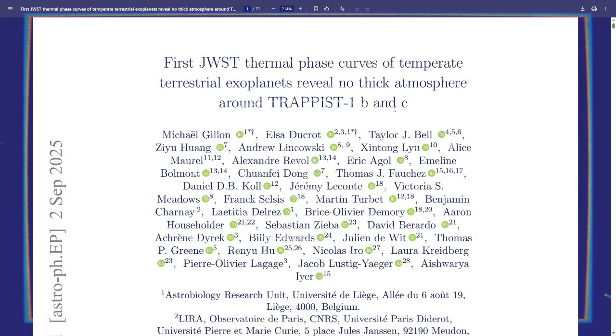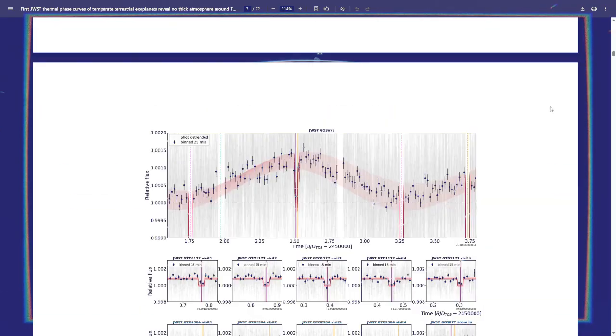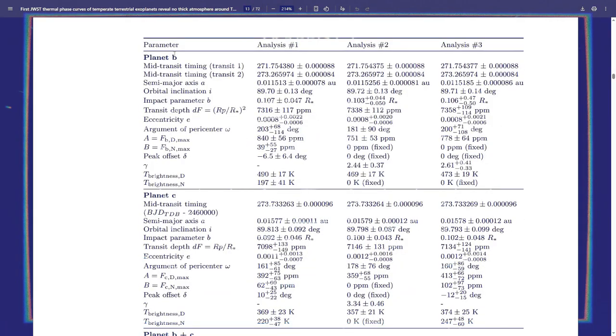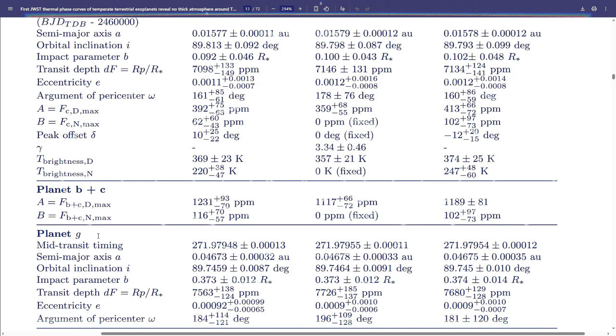No thick atmosphere around planet B and C. I'm scrolling down to see any graphs or tables or anything like that. I see this. I take a look at it. And here's planet B, here's planet C. Again, stuff we already know. Planet G right here. Interesting to see that they observed this and they got data for this.